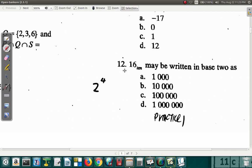16 base 10 may be written in base 2 as. Since this is 16 in base 2, you know that 2 to the 4th is equal to 16. Now 2 to the 4th in base 2 would look like 10 to the 4th in base 10.